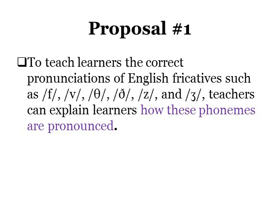First of all, teachers can teach students the correct pronunciation of English fricatives like fa, va, tha, dha, za, and ra. For example, teachers can explain how these phonemes are pronounced — that in pronouncing 'tha' and 'dha', the tongue should gently touch the teeth, and that these phonemes are not as strong or forceful as in Bangla 'tha' or 'da'. Teachers can also act as role models by modeling the correct pronunciation for students.